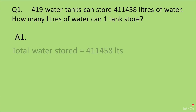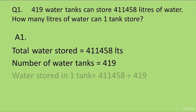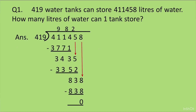Total water stored is equal to 411458 litres. Number of water tanks is equal to 419. They have given us the amount of water that 419 water tanks store, and we have to find out how much one tank stores. So we will divide. Water stored in one tank is equal to 411458 divided by 419. After dividing, the answer is equal to 982 litres.